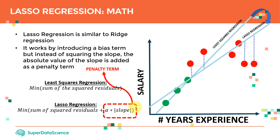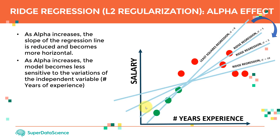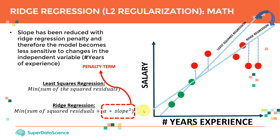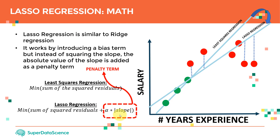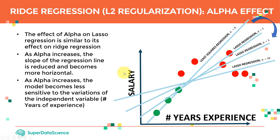Comparing to ridge regression: ridge uses alpha times slope squared, whereas lasso uses alpha times the absolute value of the slope. The idea is exactly the same — we add a penalizing term to improve the generalization capability of the model.